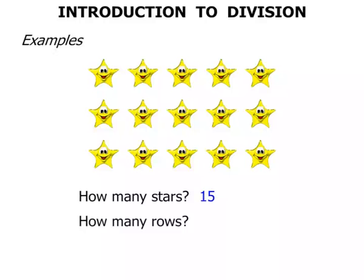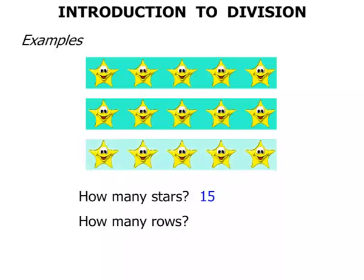How many rows? Generally with rows we go across. 1, 2, 3. We've got 3 rows across.